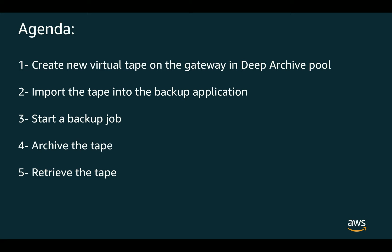The agenda for today is that we are going to create a new virtual tape on the gateway in the Deep Archive Pool, which will store the tape in the Amazon S3 Glacier Deep Archive storage class. Then we'll import the tape into the backup application, do a sample backup job on that tape, archive the tape, and then retrieve the tape.